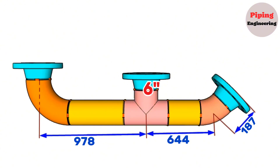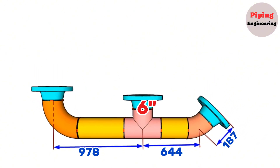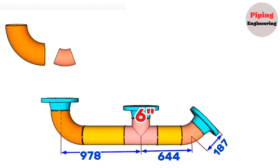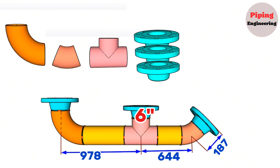We prepared this video according to a 6-inch pipe spool. This pipeline consists of one 90-degree elbow, one 45-degree elbow, one equal T, three weld neck flanges, and two pipe sections of different lengths.